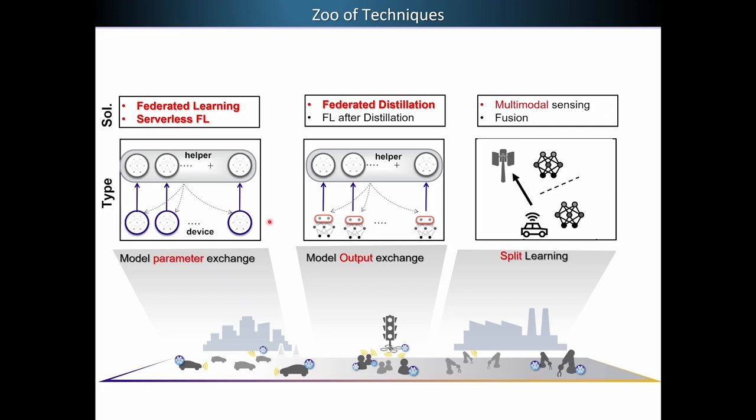Now what I'm going to do, I'm going to walk you through a number of techniques we developed in my group. So the first one is essentially called model parameter exchange. So here devices communicate their models to the server. This goes under the name of federated learning. The second family of algorithm is called model output, in which now the devices communicate the output of their models instead of their entire model parameters.